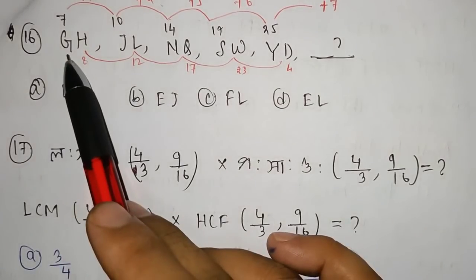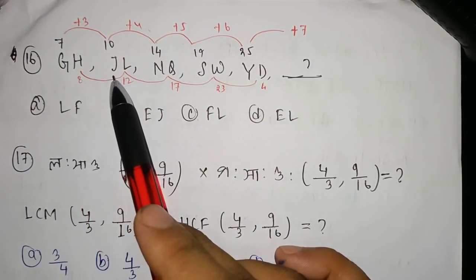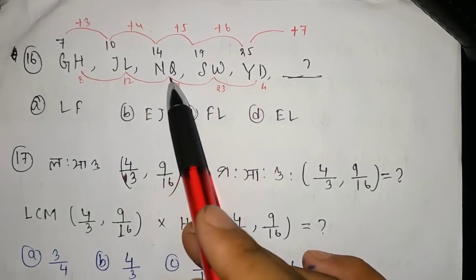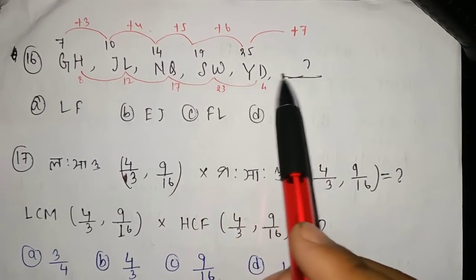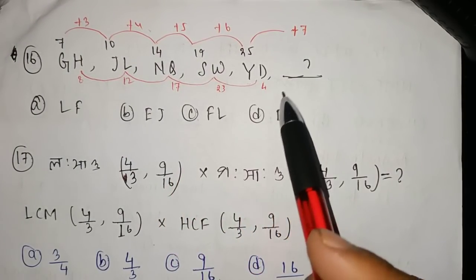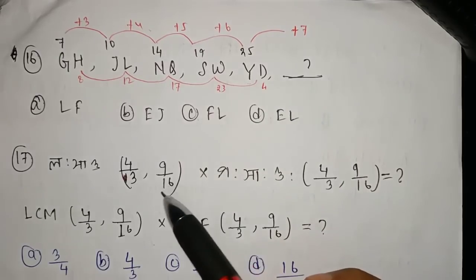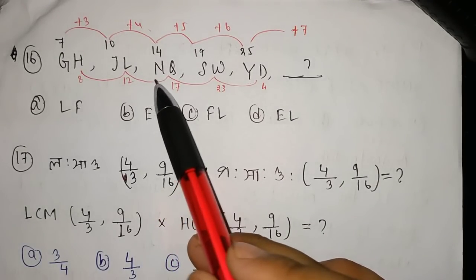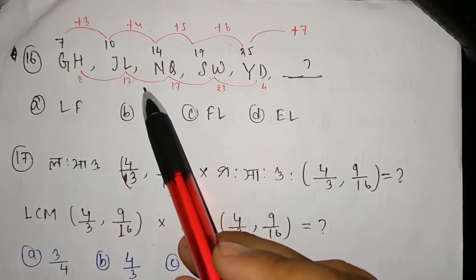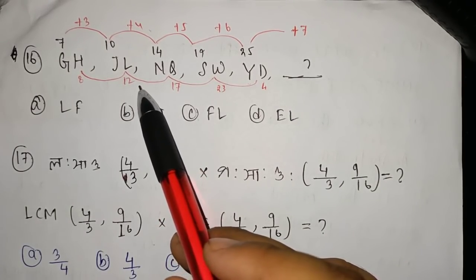The first question is a coding-decoding and reasoning problem. The series given is: G, L, N, Q, S, W, Y, D. This topic involves coding, decoding, and reasoning.